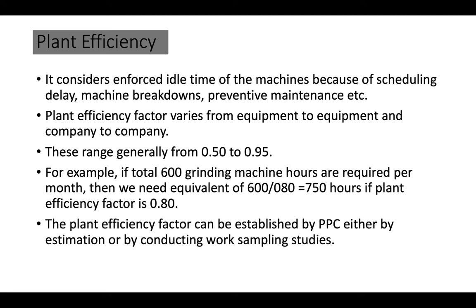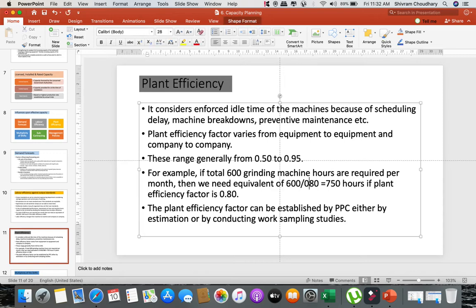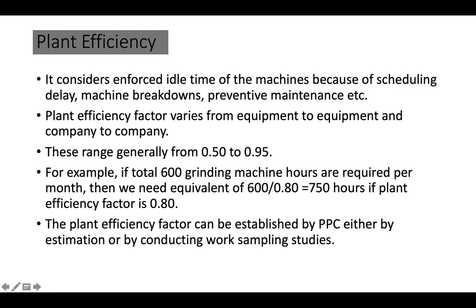Plant efficiency is also a factor affecting capacity planning. It considers enforced idle time of the machine due to scheduling delays, machine breakdown, and preventive maintenance. The plant efficiency factor varies from equipment to equipment and company to company, usually ranging from 50% to 95%. For example, if 600 grinding machine hours are required per month, we need 600 divided by 80% = 750 hours if the plant efficiency factor is 80%. This factor can be established by PPC either by estimation or by conducting work sampling studies.